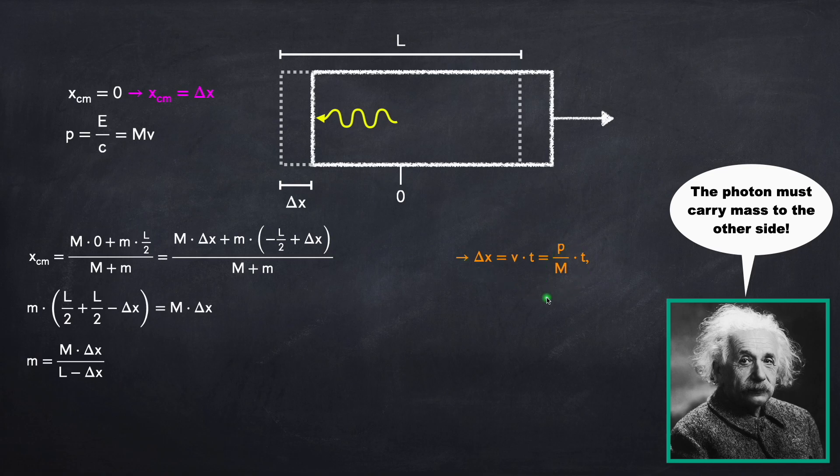Now we have to figure out what the time is. Well the time will be how long it takes the photon to go from one side of the box to the other. This will just be the total distance traveled by the photon divided by the speed of the photon, which is the speed of light.